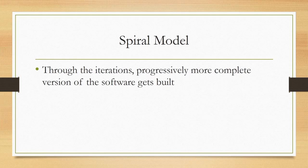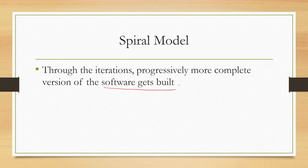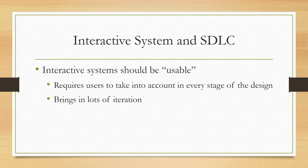Then comes the fourth quadrant, where whatever results have been achieved so far after evaluation with the customer in the third quadrant are reviewed, and we plan for the next iteration if required. So here we are primarily evaluating the results achieved so far and planning for the next iteration. These are the four quadrants of the spiral model. As you may have noticed, the spiral model is not a fundamental developmental model like the waterfall model; instead it captures higher-level concerns and activities required to implement a lower-level or fundamental model. Through the iterations of the spiral, progressively more complex or more complete versions of the software get built.